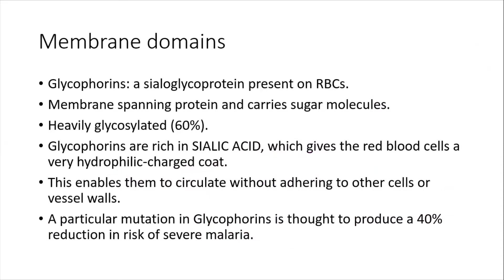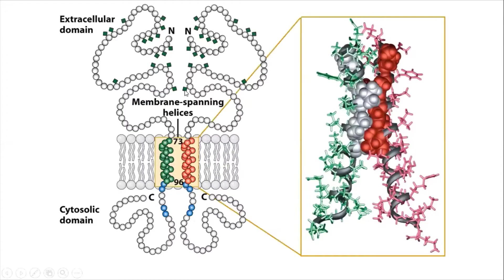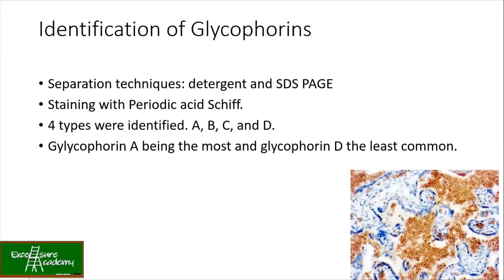This is your glycophorin — this is how it looks. The extracellular domain is there where the green square shapes at the end terminus are your sialic acids. They span the membrane and you have the C-terminal at the cytosolic region. You can see how beautifully the two alpha helices are arranged and how they help in carrying out the sugar molecules.